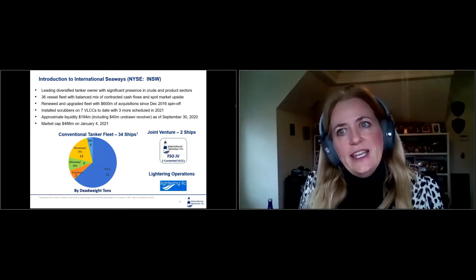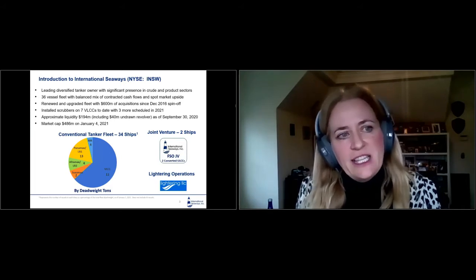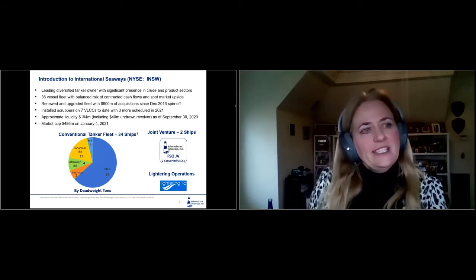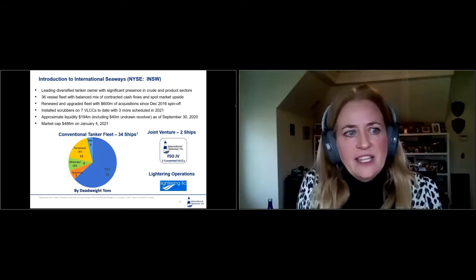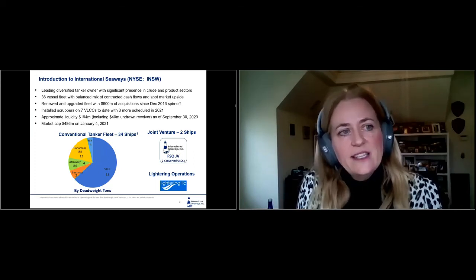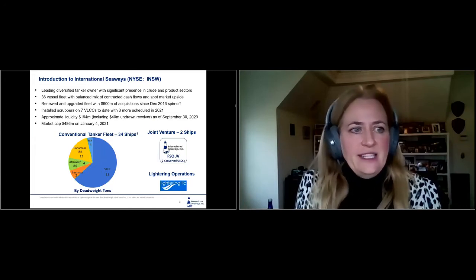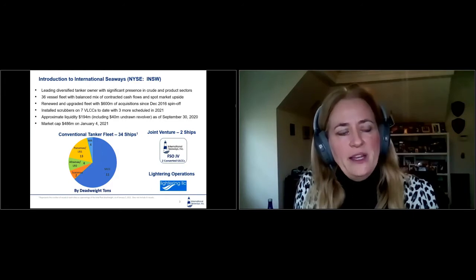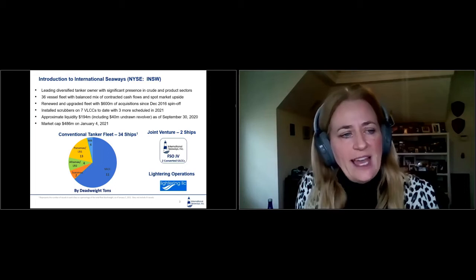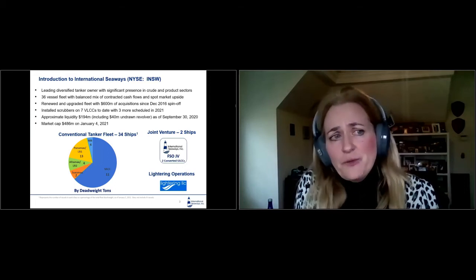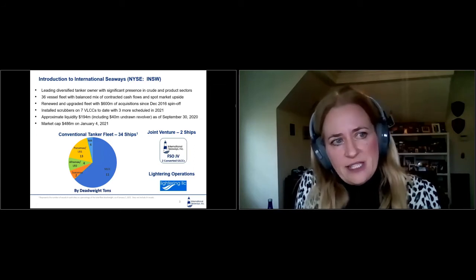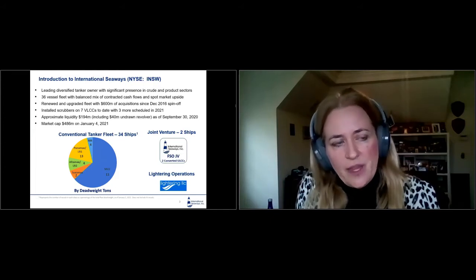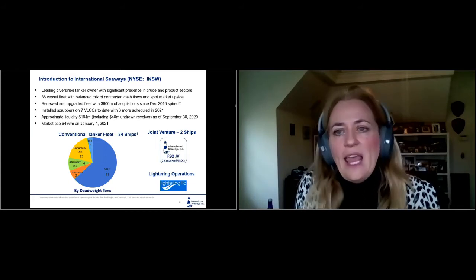The other area where we're next in size is our Panamax/LR1s where we have 13 of these vessels. These vessels trade in the Americas, North and South America. They are in a joint venture with Ultragas of Chile and Flowpack of Ecuador. This joint venture is really a niche trade, and these ships optimize their TCEs. We've really proven over the years that that's a differentiator for International Seaways. I want to touch on the upper right hand side here, our joint venture. This is a significant asset that International Seaways has in our portfolio.